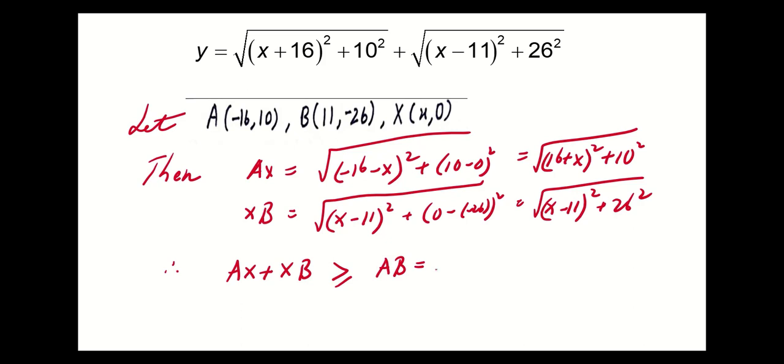And the length of AB is equal to √((-16-11)² + (10-(-26))²). This means it is equal to √(27² + 36²), which equals 45.